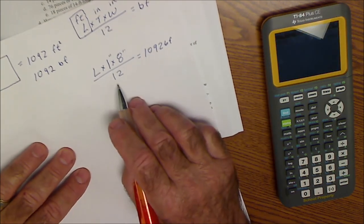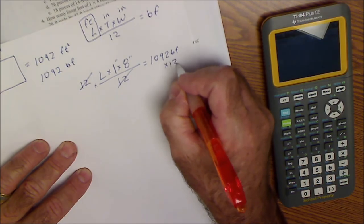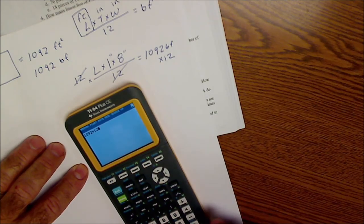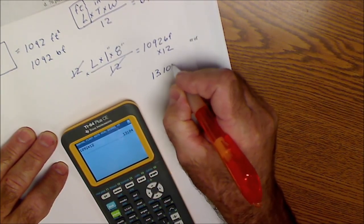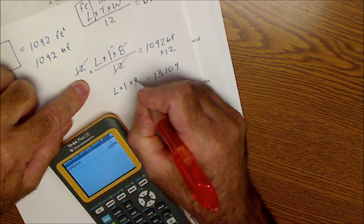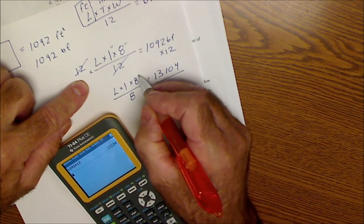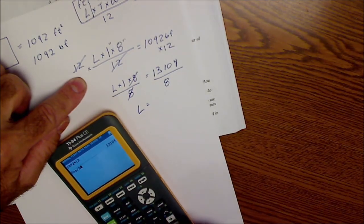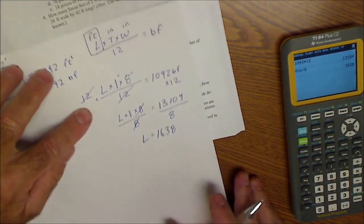I'm going to solve for that. I'm going to get rid of that 12 by multiplying both sides by 12. That'll cancel with that. And then I take 1092 times 12. So I take 1092 times 12, and that's equal to 13,104. And over here, I have 1 times 8 times L. So I have L times 1 times 8. Getting L by itself, I'm going to divide both sides by 8. So the length of 1 by 8 I'm going to need is that number 13,104 divided by 8.